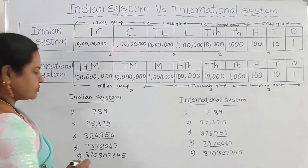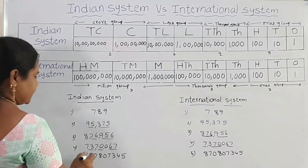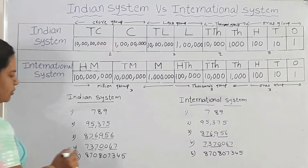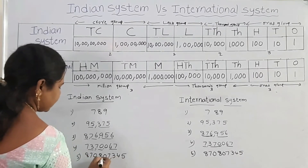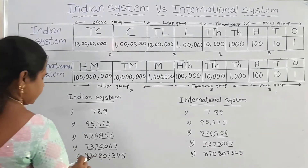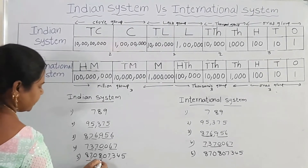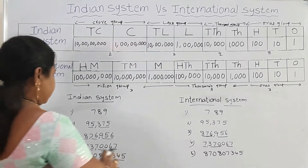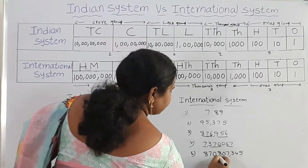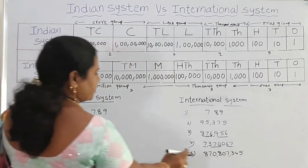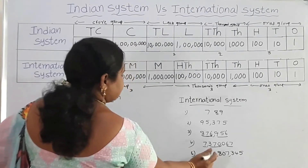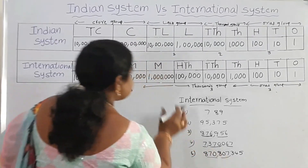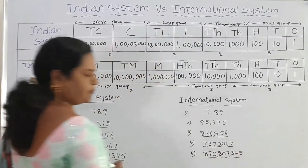The next number is 870,807,345. In the Indian system, first 3 places, next 2 places, next 2 places — so this is 87 crore, 8 lakhs, 7,345 — written as 87,08,07,345. In the international system, 1st comma after 3 places gives 870,807,345.